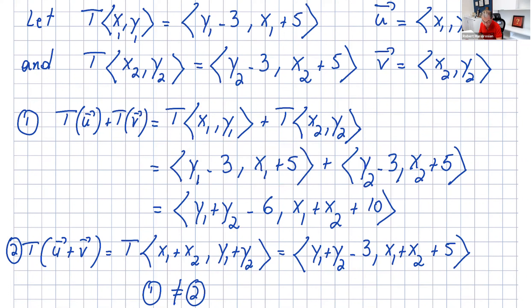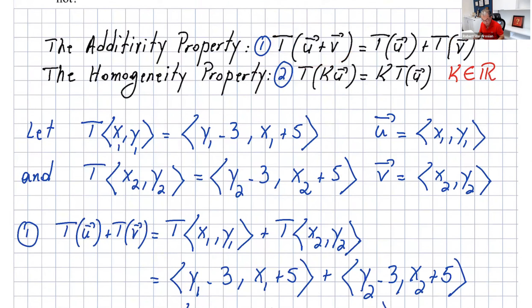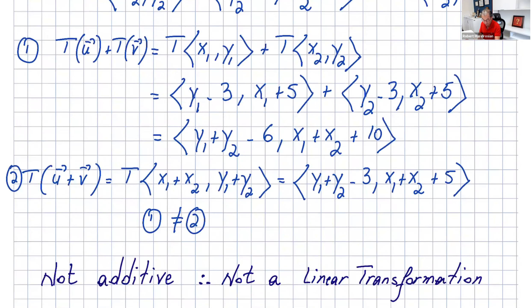Now if we do the left side of this equation, let's see if we get the same thing. So T(x₁ + x₂, y₁ + y₂) will give us ⟨y₁ + y₂ - 3, x₁ + x₂ + 5⟩ from the definition.